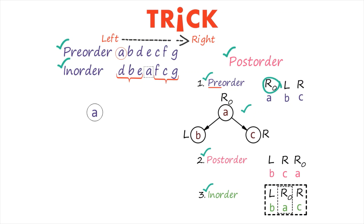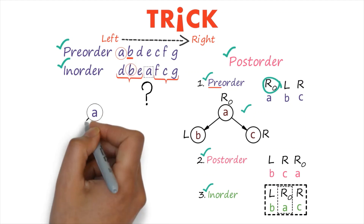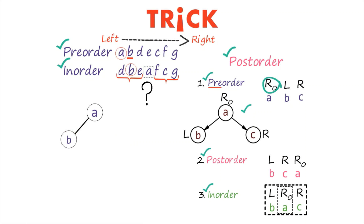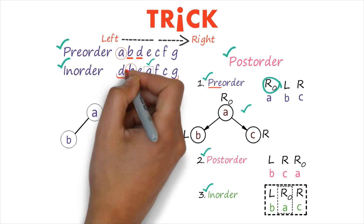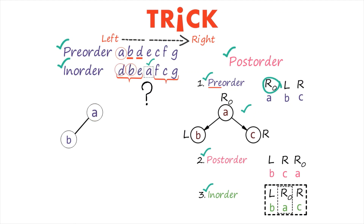We have identified the root of the tree as A. The question is: where should we keep B? Looking at the in-order traversal, B exists at the left side of the root, so in the tree it will be on the left side of A. Now, where should we keep D? According to the in-order traversal, D is also at the left of the root, but we already have B there, so D goes to the left of B. That is the only position for D.